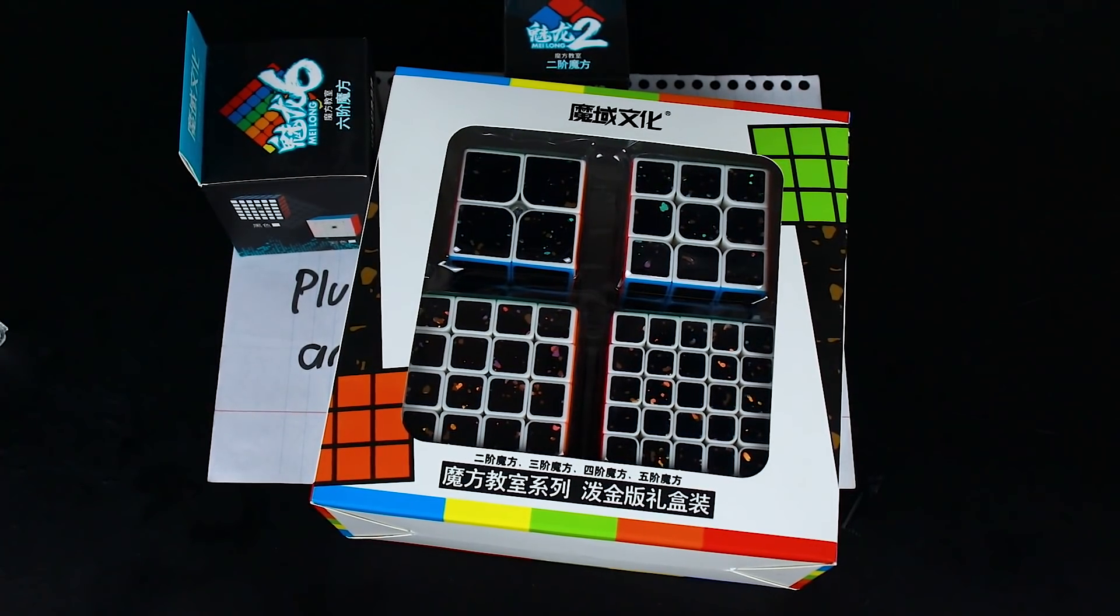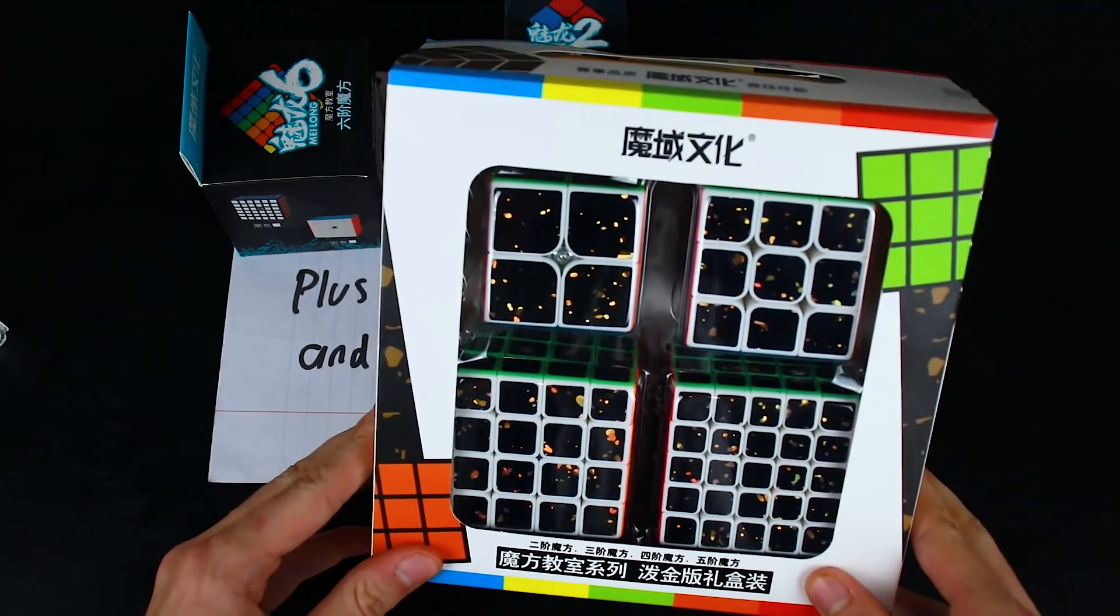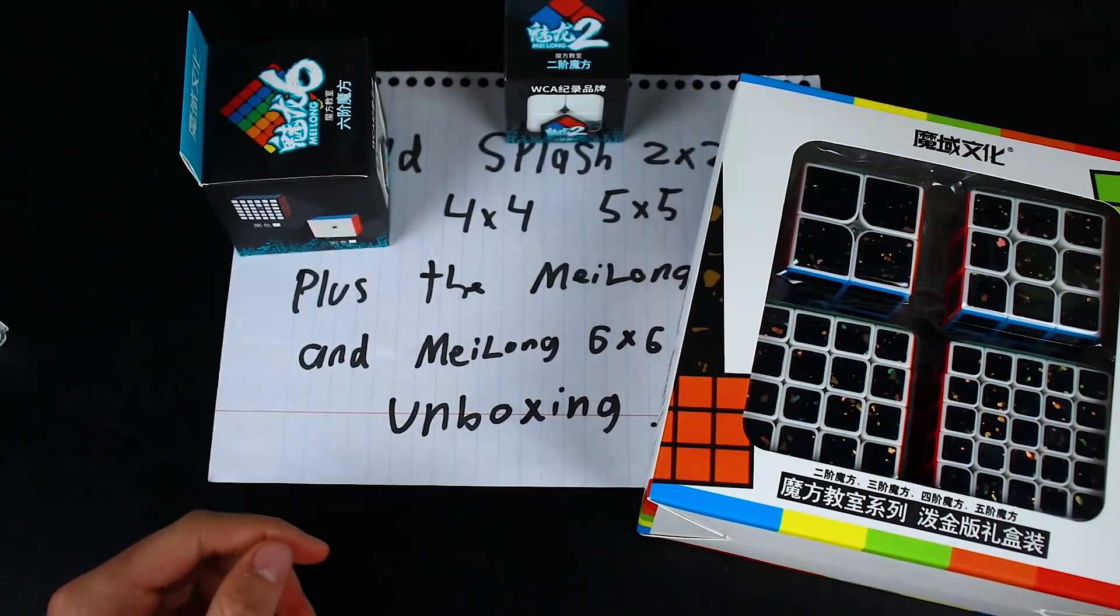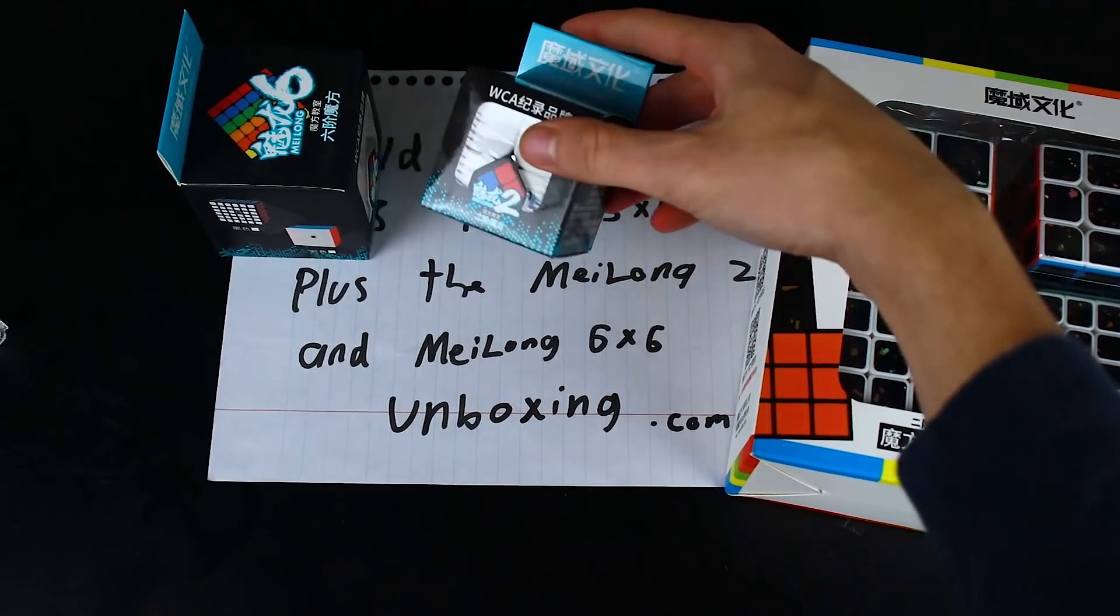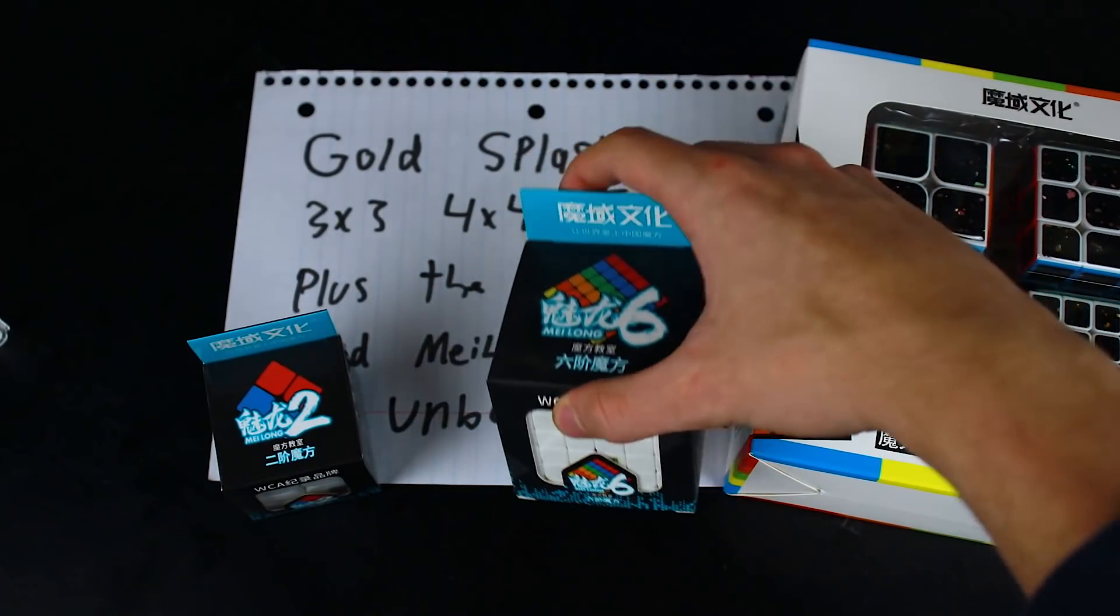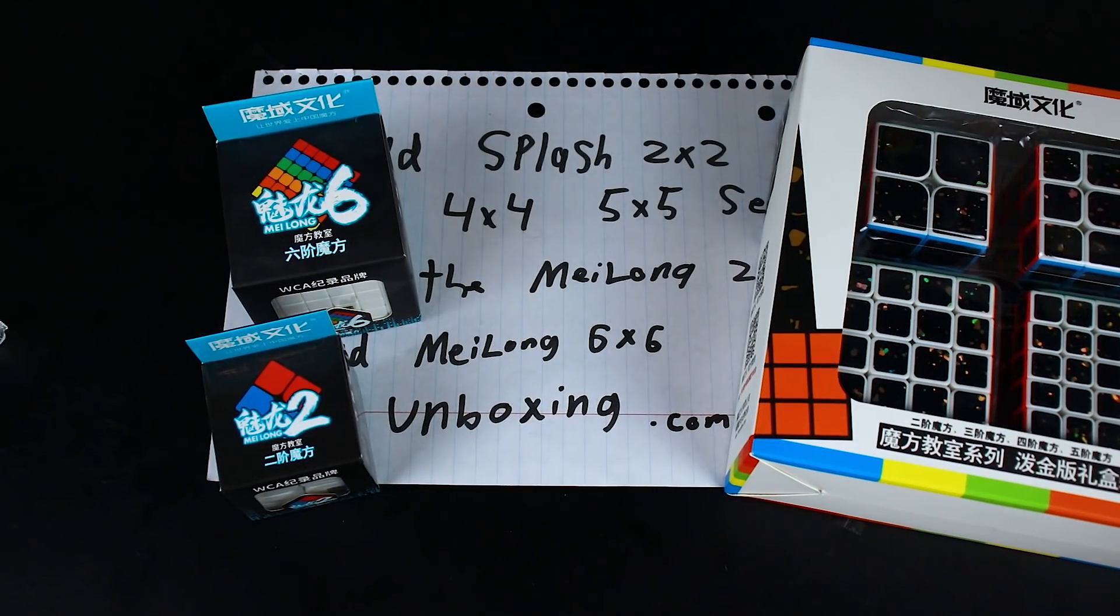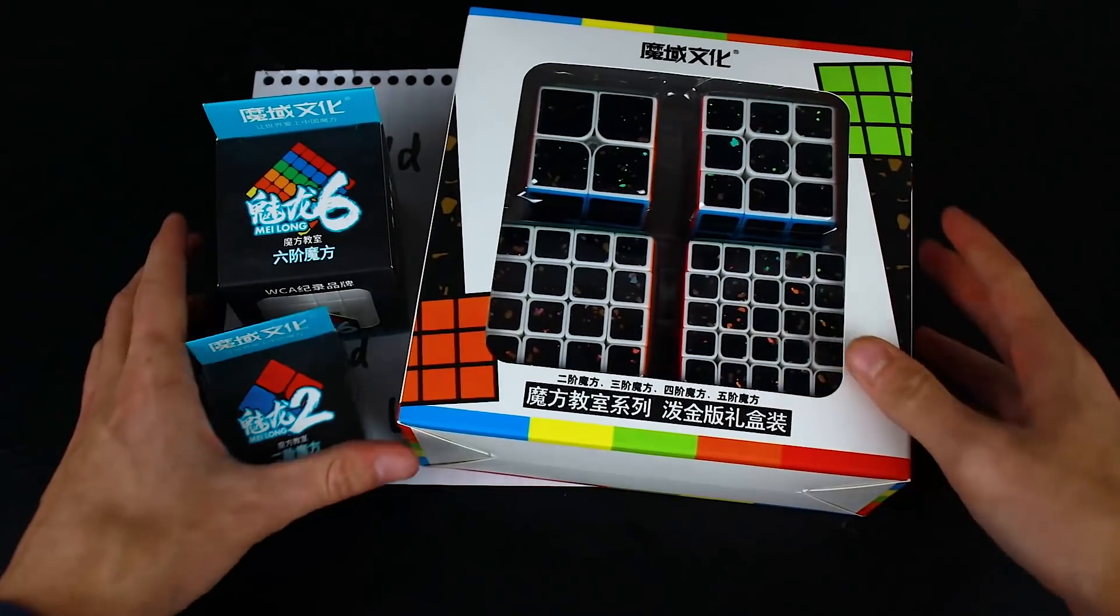Hi guys, how's it going, Blue here. Welcome to Cuba Rhythms. In this video we are going to be unboxing the Cubing Classroom Gold Splash 2x2 through 5x5 set, the Meilong 2x2, and the Meilong 6x6. Let's get into it. We'll start with the Cubing Classroom stuff.